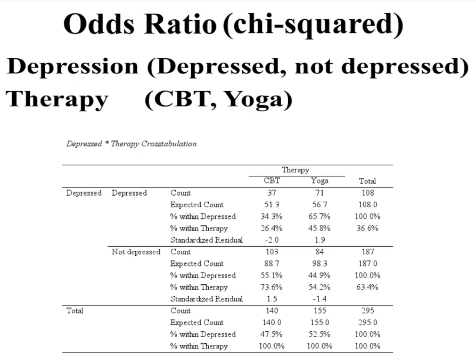An odds ratio is basically the odds of something happening from a dichotomous outcome — a yes or no, live or die, heads or tails — divided by the odds of something not happening. It's the odds of having a true outcome divided by the odds of having a false outcome.